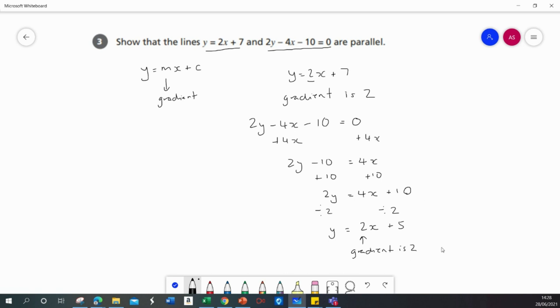Now because the gradients are the same, that means that the lines are parallel. So the gradients are both 2 and so the lines are parallel.